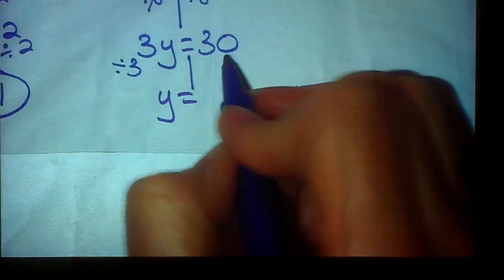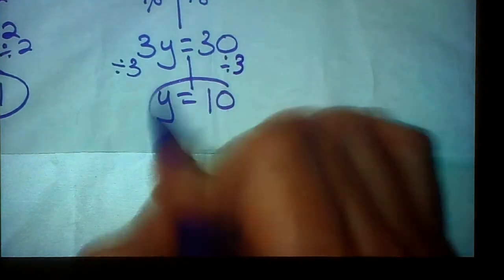But like Mrs. Trombley said, just show us your work. It takes 2 seconds. Just do it. 3 divided by 3 is 1y, or just plain old y. 30 divided by 3 is 10. Y equals 10.